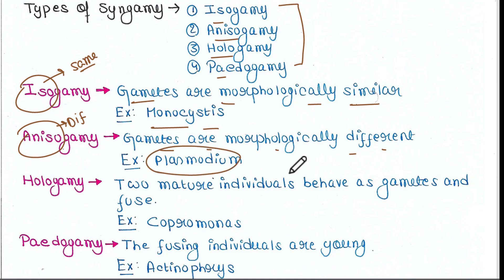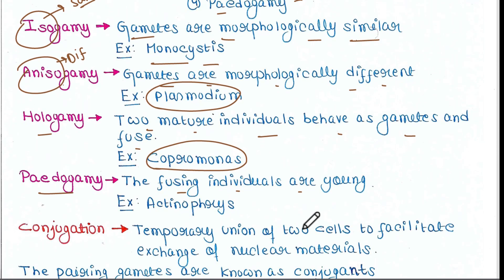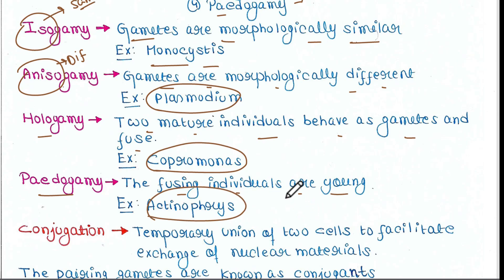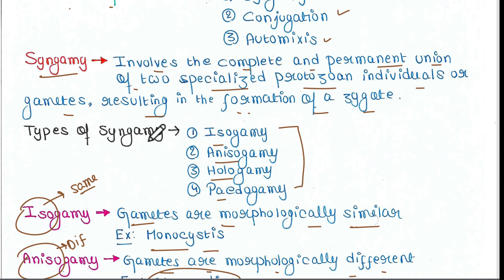Next is hologamy, where two mature individuals behave as gametes and fuse. This is found in Copromanas. Then we have pedogamy — the fusing individuals are not adult; they are young. Example: Actinophrys. So these are the four different types of syngamy.